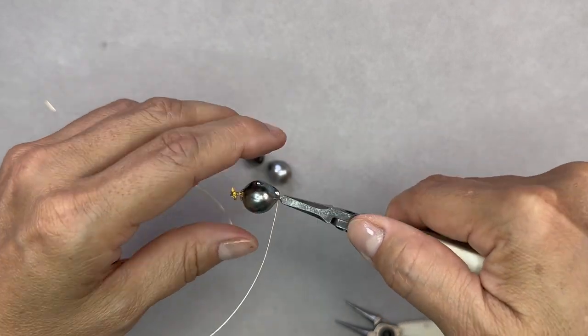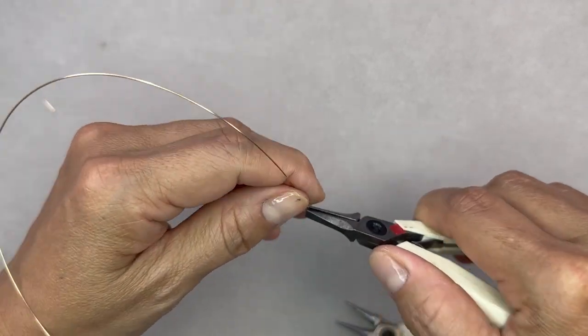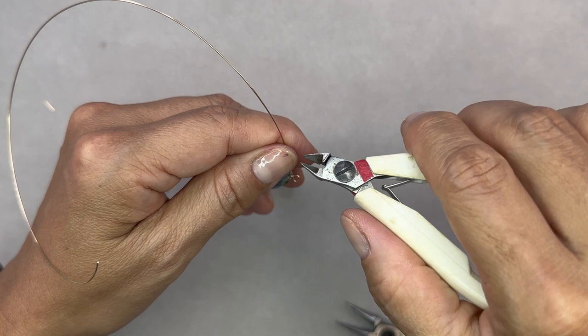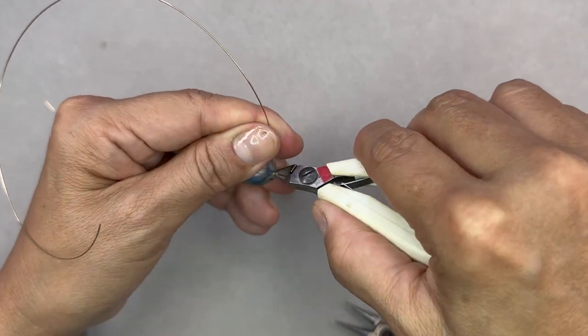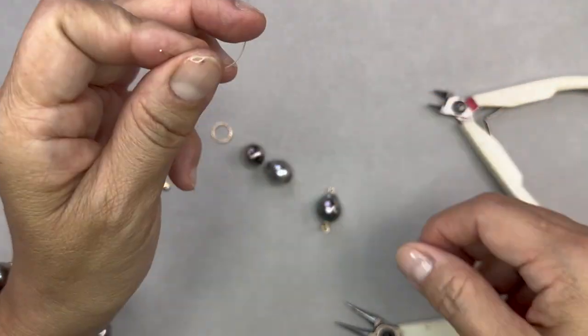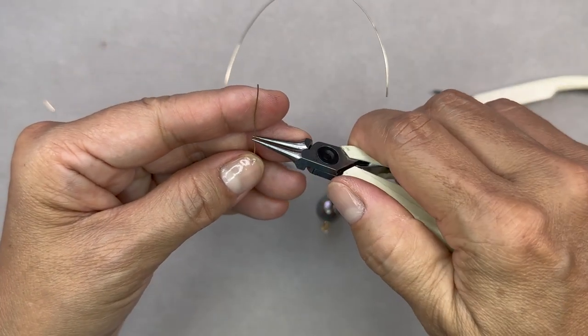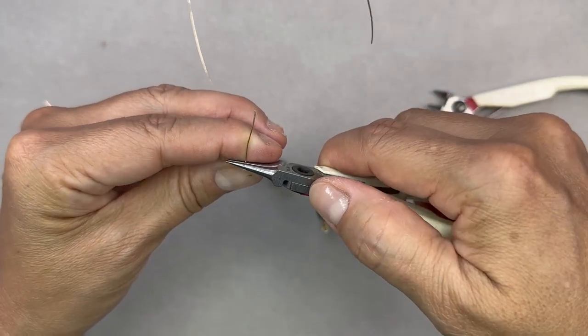A quick design tip would be pay attention to the colors. There's a natural graduation of colors in the pearls and you can use that to your advantage. So if you want to do like an ombre effect, you can make it go light to dark on each bead.